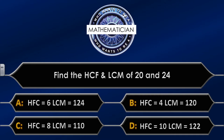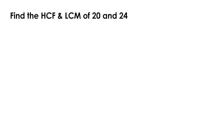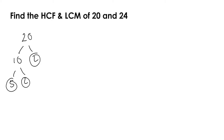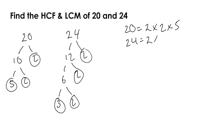The correct answer is B. To find the highest common factor and lowest common multiple of 20 and 24, we need to break them down to prime factors using prime decomposition. Twenty breaks down to 2, 10, 5, and 2 — all prime numbers. Twenty-four breaks down to 2, 12, 2, 6, 3, 2. So 20 equals 2 times 2 times 5, and 24 equals 2 times 2 times 2 times 3.